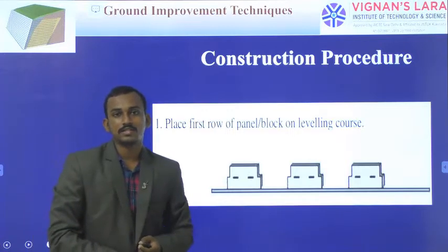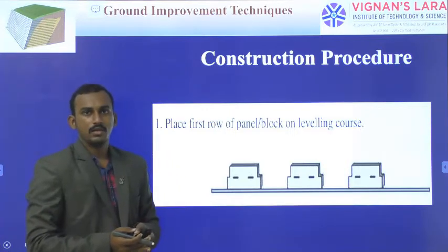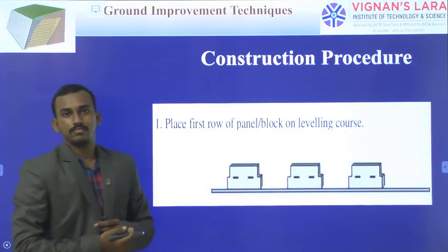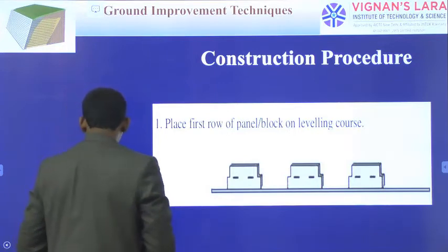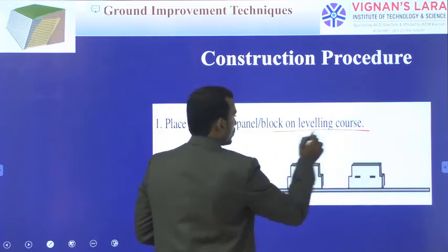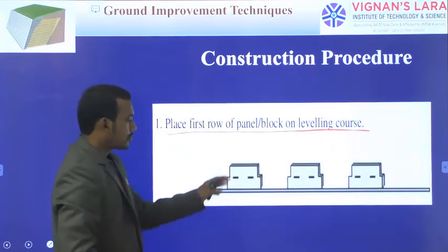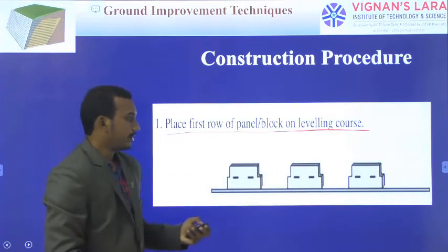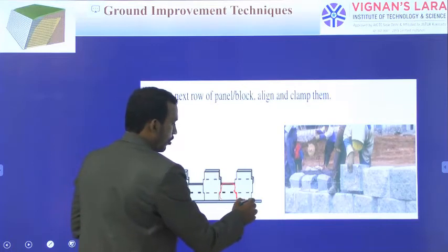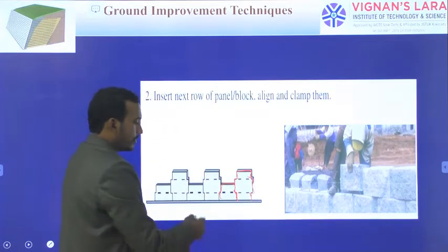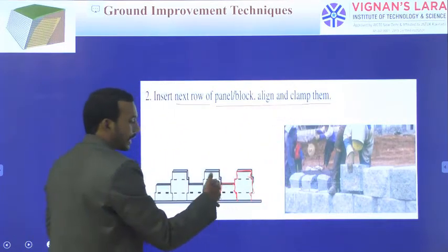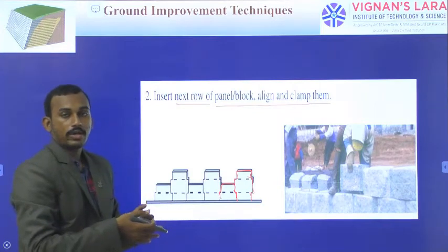Construction procedure: First, place the first row of panels or blocks on a leveling pad. Next, over the blocks, with some connections, place the second row. Fill the soil to this level and place the reinforcing elements. By using this procedure, insert the next row of panel blocks, aligning or clamping them and locking each to the other.